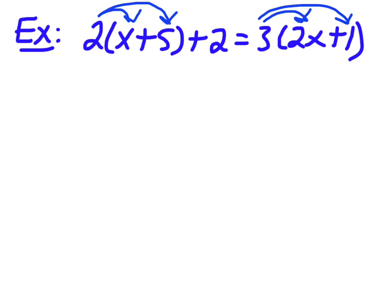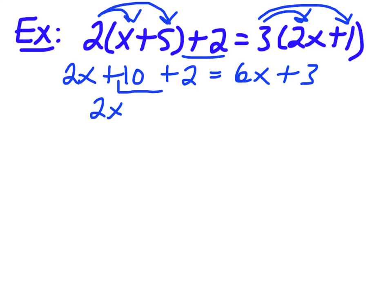So, then I have 2 times x is 2x. 2 times 5 is 10. And plus 2. So, this is my actual step here, that plus 2. Just makes it a pain in the butt. Really, all it does. Then, 3 times 2x is 6x. And 3 times 1 is 3. So, then I have 2x. And then I'm going to add these two guys. And that becomes plus 12. This is equal to 6x plus 3.